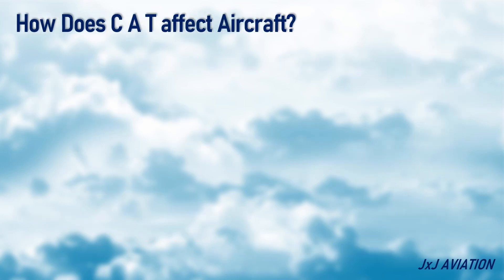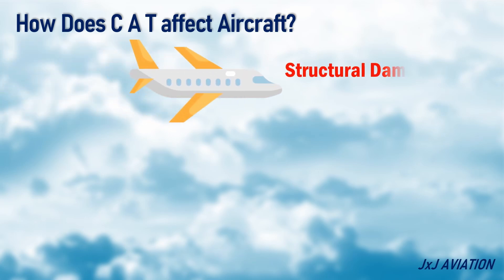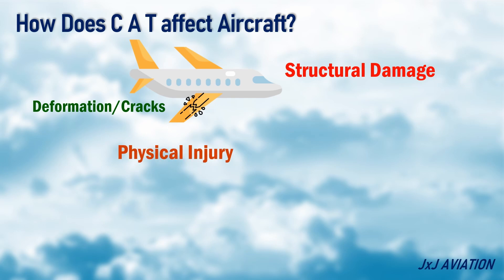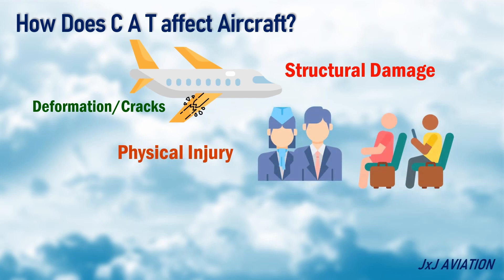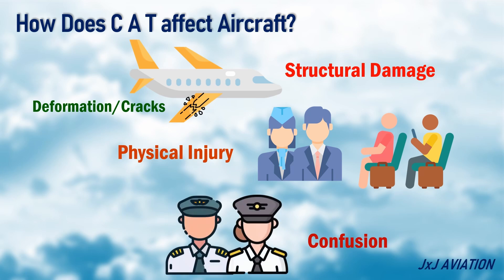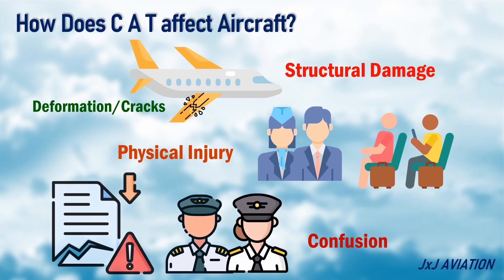How does CAT affect an aircraft? This turbulence can cause structural damage to the aircraft. Severe cases of turbulence can result in permanent deformation or cracks on the airplane structure. It can lead to physical injury to the crew and passengers, and it can lead to confusion and affect the flight crew's ability to complete tasks or procedures.